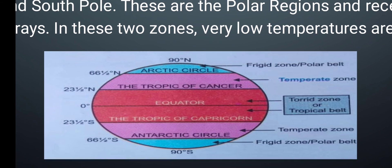The third zone, shown in sky blue color, is known as the Frigid Zone. The sun's rays here are quite slanting. It is found from 66.5 degrees to 90 degrees north, and 66.5 degrees south to 90 degrees south — from the Arctic Circle to the North Pole, and from the Antarctic Circle to the South Pole. This is the coldest zone of the earth because the sun's rays are slanting throughout the year.